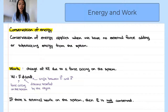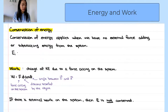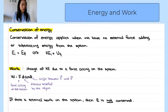If there are no other external forces acting on the system, then energy is conserved. In other words, the initial energy of a system equals its final energy. In terms of kinetic and potential energy, conservation of energy means: initial kinetic energy plus initial gravitational potential energy equals final kinetic energy plus final gravitational potential energy.